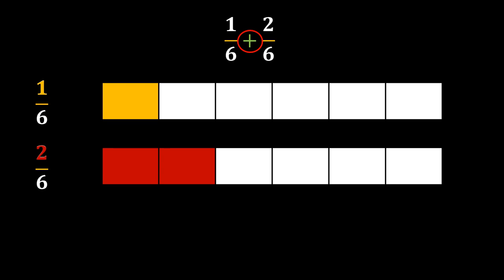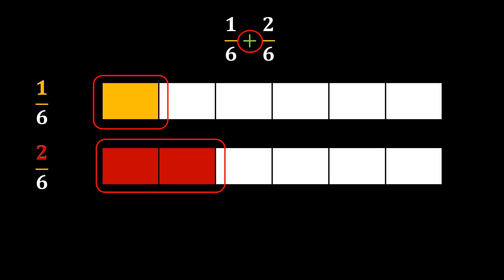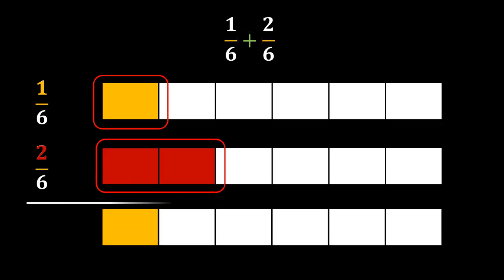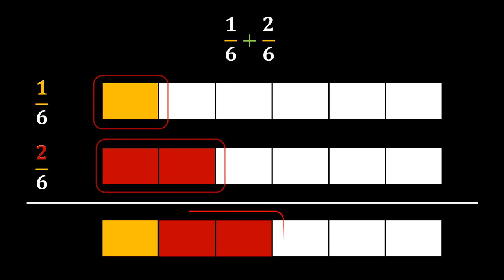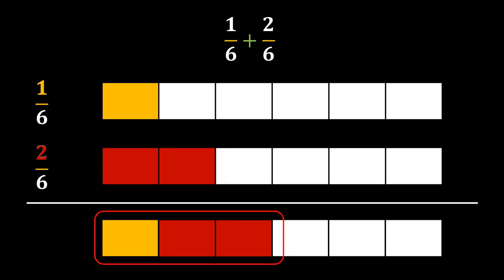Whenever we add two things, we simply combine all the things the two have. In this fraction we have all these pieces, so we have to combine them. Starting with the piece we have from the first fraction, which is 1 piece out of 6, we have the same sized pieces in the second fraction, so we combine them like this. Now you can see this is our answer — we have collected all the pieces from the previous two fractions, 1 sixth and 2 sixths. In the final resulting bar, you can easily read it as a fraction: 3 sixths, because we have 3 pieces out of total 6 pieces.